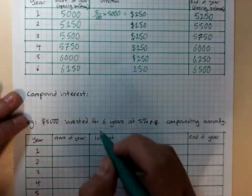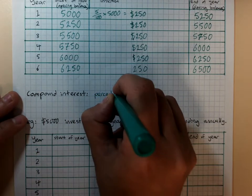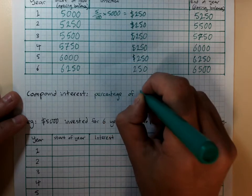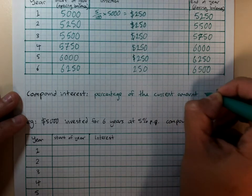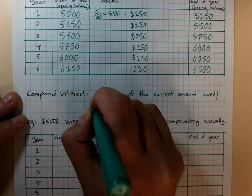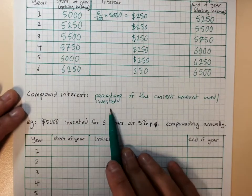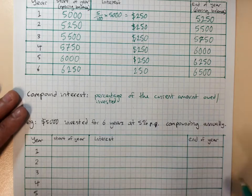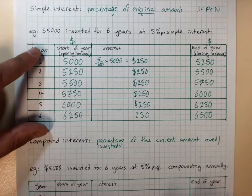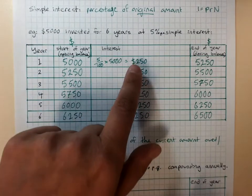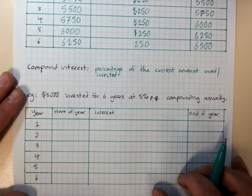Compound interest works on a percentage of the current amount that's owed or invested. Now, we didn't really need a table for this one, because I kept earning the same amount of interest. But look what happens with compound interest.